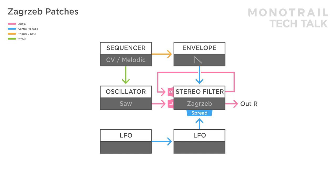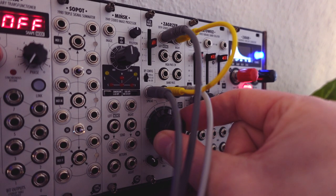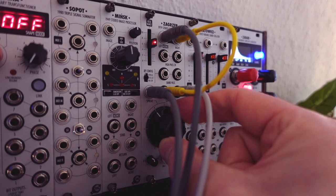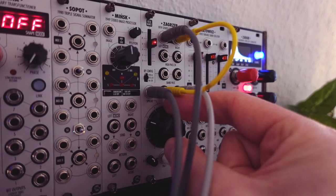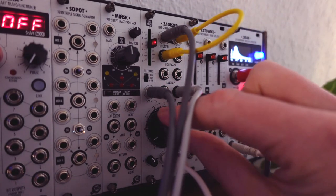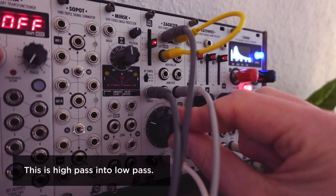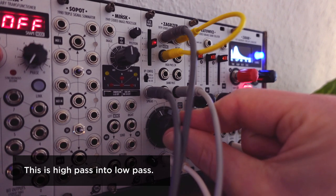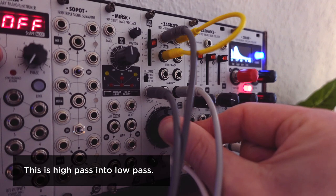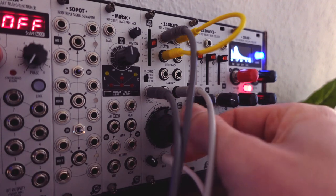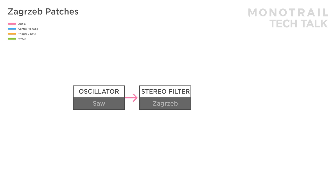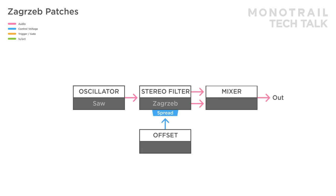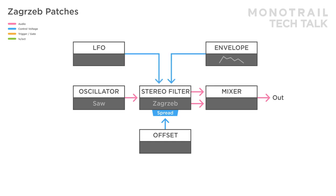If you take both the low-pass outputs, you get a filter with a stacked 48dB per octave slope. But you can experiment with different filter combinations. By combining the filters, Zagreb can also achieve interesting mono formant filter responses. Patch both bandpass outputs to a mixer and send an offset voltage to the spread to set different frequencies for the filters. In this setup, a simple LFO and a complex looping envelope are modulating the filter to bring out the sound.